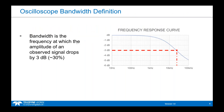Before we talk about how much bandwidth you need, you need to know what oscilloscope bandwidth is. Simply put, oscilloscope bandwidth is the frequency at which the amplitude of your signal drops by three decibels — approximately a 30% reduction in signal amplitude. You can see in this frequency response that the minus-3 dB point occurs roughly at 25 kilohertz.